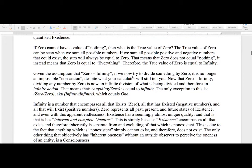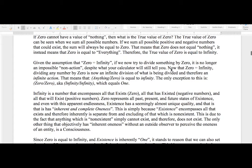Given the assumption that zero equals infinity, if we now try to divide something by zero, it is no longer an impossible non-action. Despite what your calculator will still tell you, now that zero equals infinity, dividing any number by zero is now an infinite division of that which is being divided, and therefore an infinite action. That means that anything divided by zero is equal to infinity. The only exception to this is zero divided by zero, aka infinity divided by infinity, which equals one.